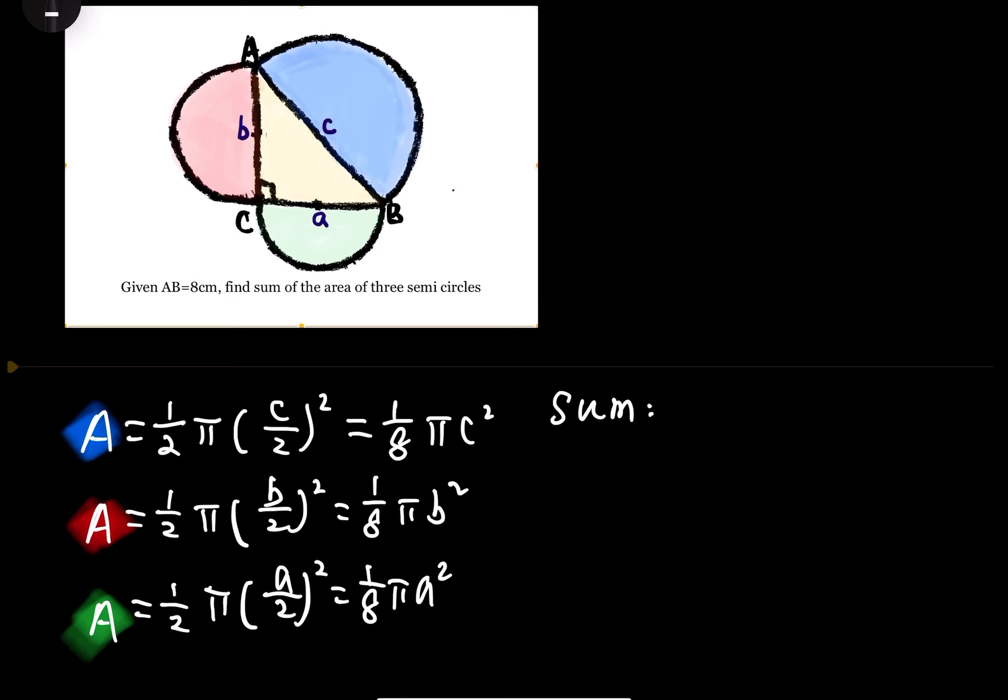Now let's find the sum. The sum equals 1/8 π c squared plus 1/8 π b squared plus 1/8 π a squared. Using factorizing skills, we factor out the common factor 1/8 and π, leaving us with c squared plus b squared plus a squared inside.